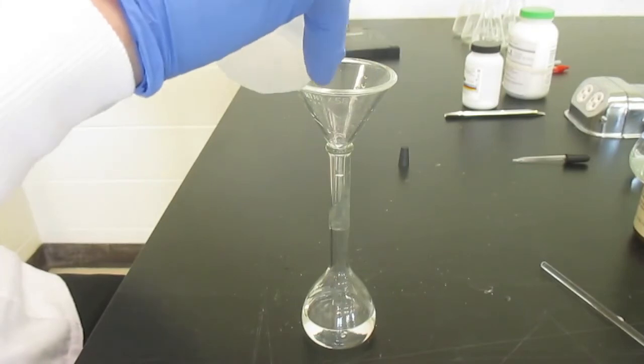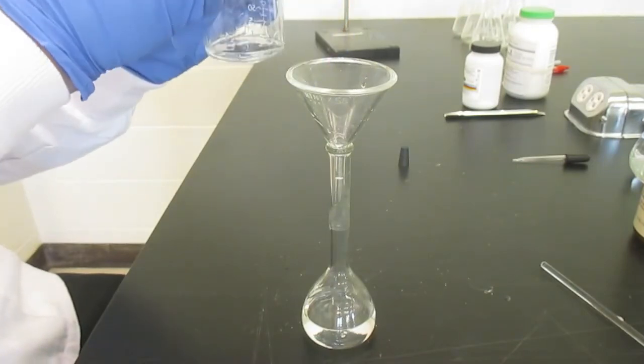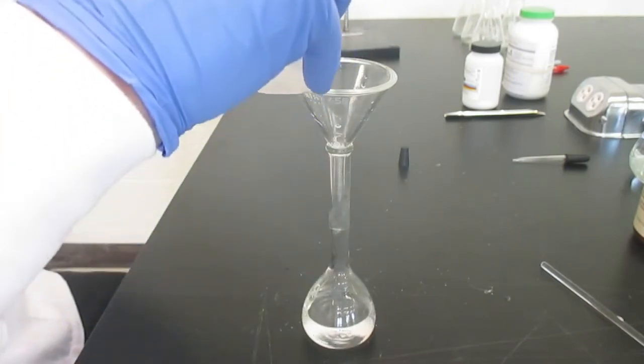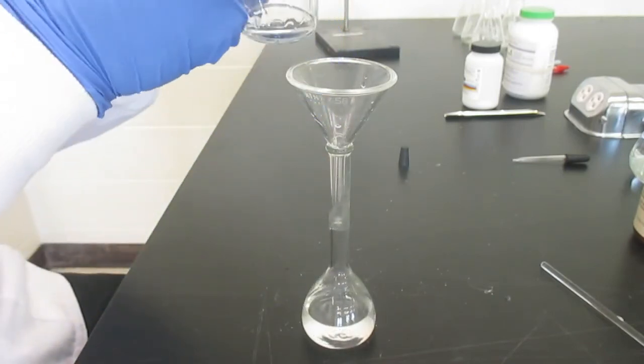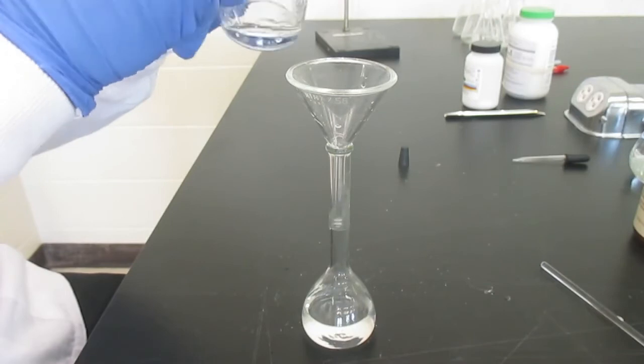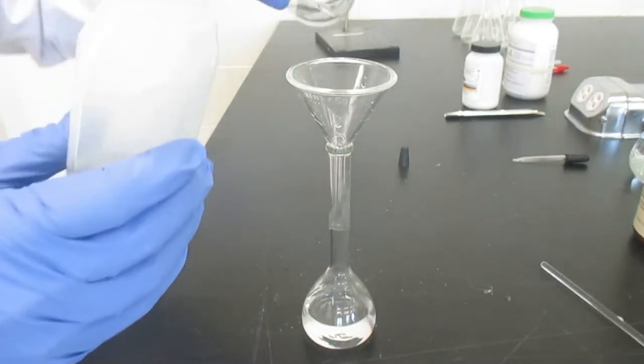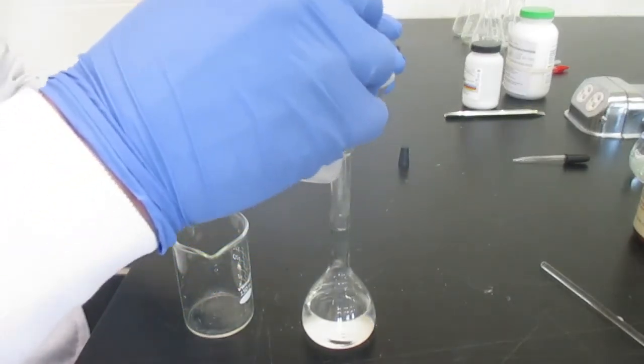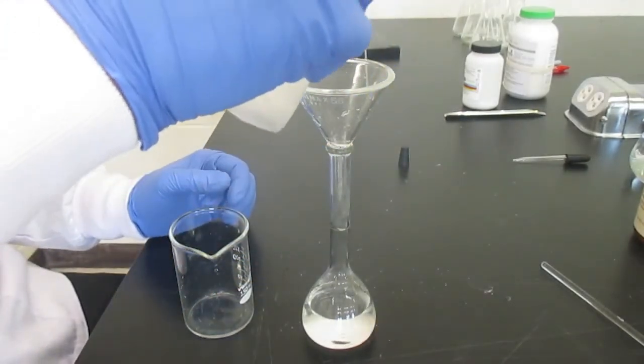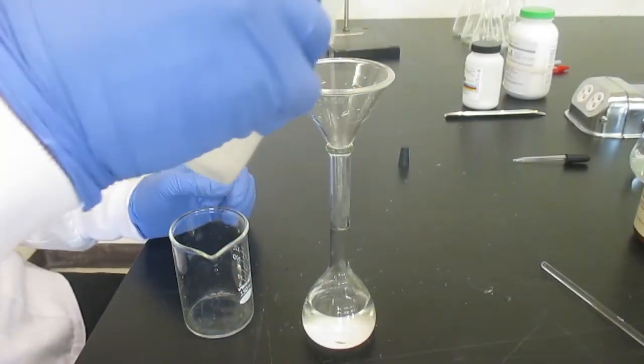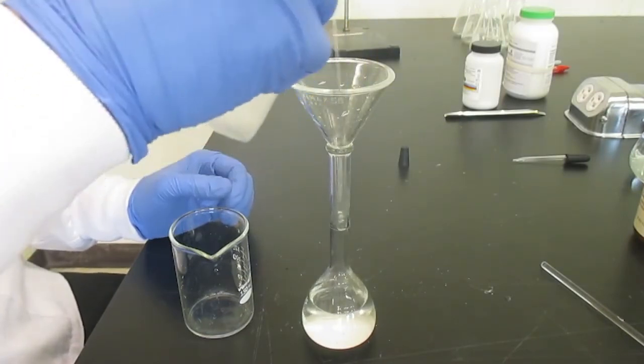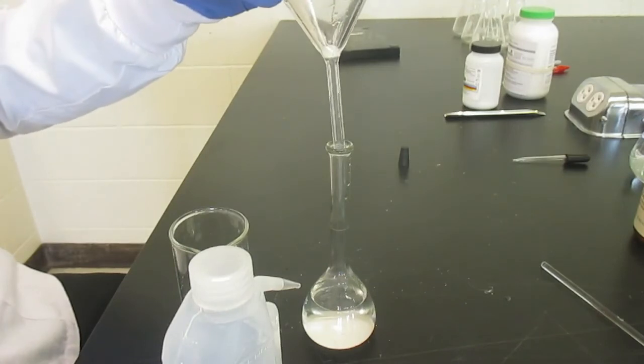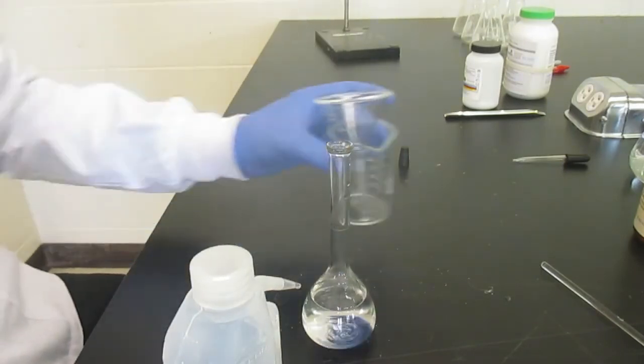So that means we rinsed the beaker. It means we rinsed the beaker again. Because we need every single molecule of KHP in here or we don't have 0.15 moles per liter. And if we don't have that, then our standardization is not going to do us much good. Alright, so everything rinsed out. And then we top it up to the line.